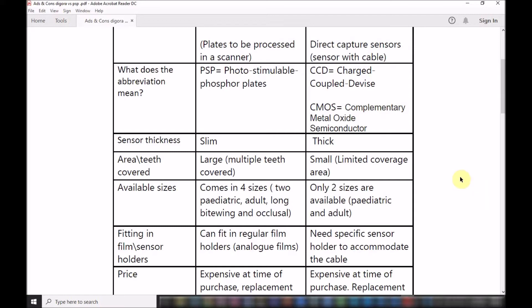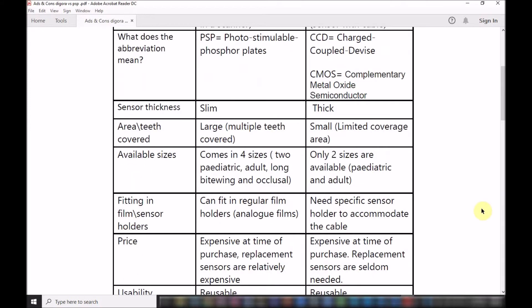Available sizes: the indirect sensors come actually in four sizes - two pediatric, size zero and size one, and then there is the long bitewing and there is an occlusal. It depends on the manufacturer. The sizes of the direct type are not that flexible. It comes either in size one and size two, so it's a small size and the large size, the pedo size and the adult size. So you have more size variation in the indirect type of sensors.